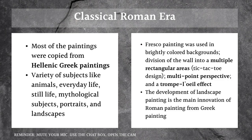Now let's talk about classical Roman art. Most of the paintings were copied from Hellenic Greek paintings and covered a variety of subjects like animals, everyday life, still life, mythological subjects, portraits, and landscapes. Fresco painting was also used by the Roman Empire, typically with brightly colored backgrounds and division of the wall into multiple rectangular areas, like a tic-tac-toe design.